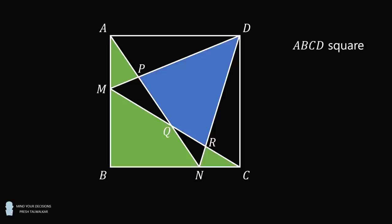The question is, if the area shaded in blue is equal to 1, what is the total area of the regions shaded in green?